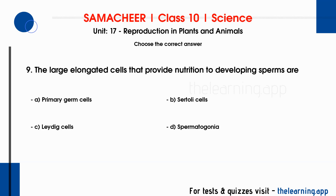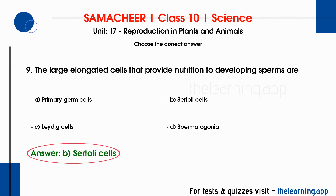Ninth question: the large elongated cells that provide nutrition to developing sperms are DASH. Options are A. Primary germ cell, B. Sertoli cells, C. Leydig cells, D. Spermatogonia. The correct answer is option B, Sertoli cells.